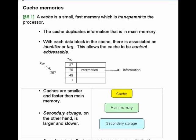At any point, a block will either be in the cache or not in the cache. And if it's in the cache, then its block number in main memory will be held in the tag field.